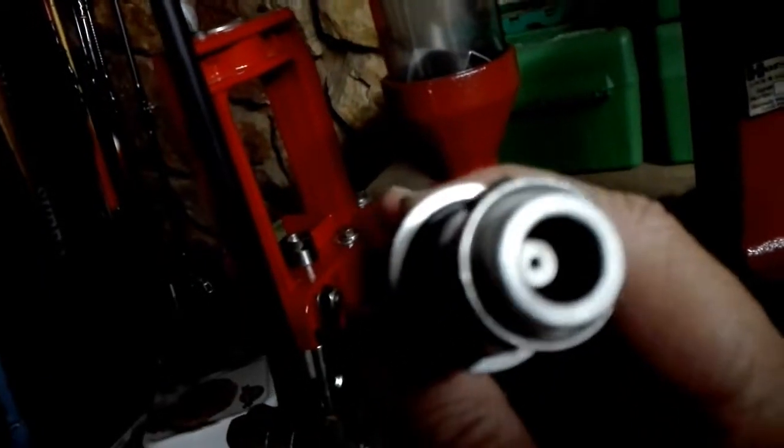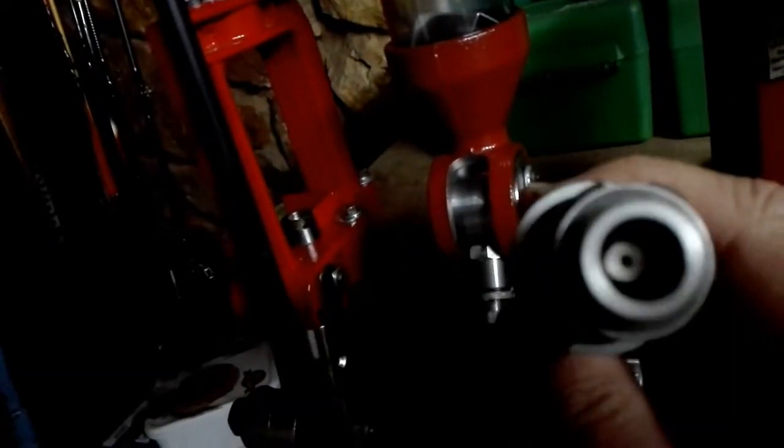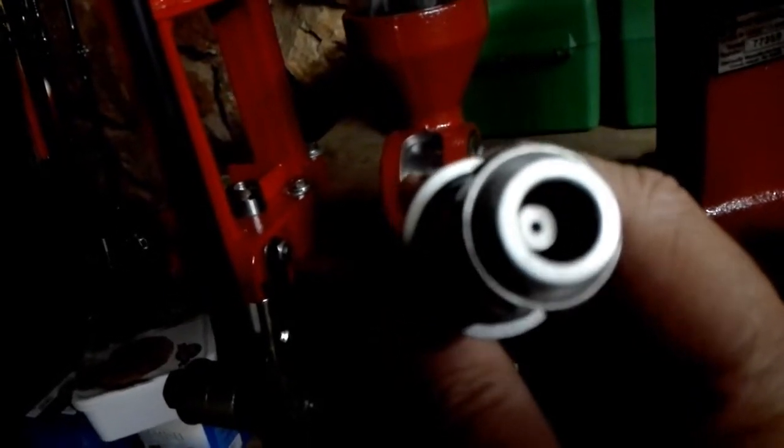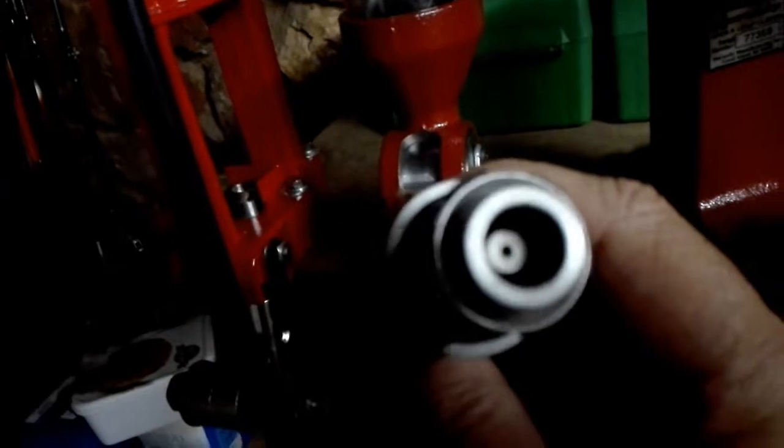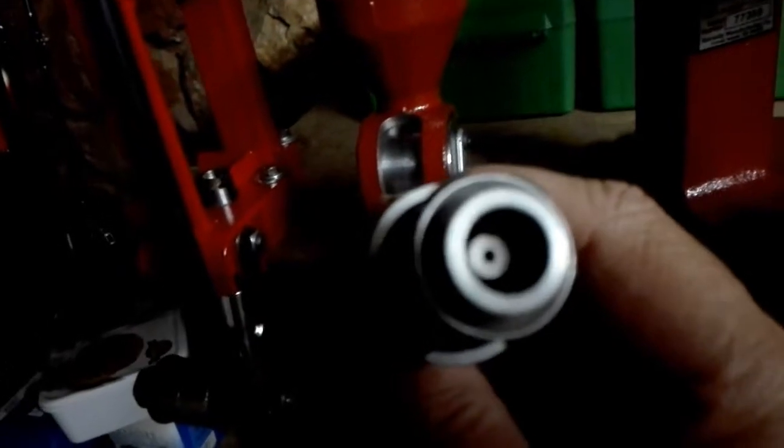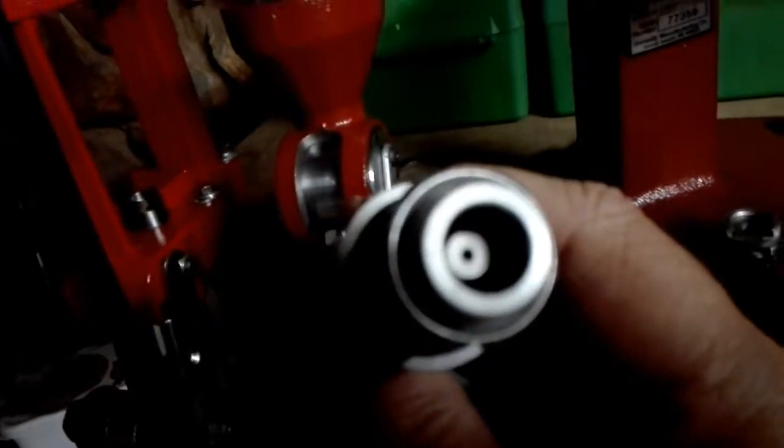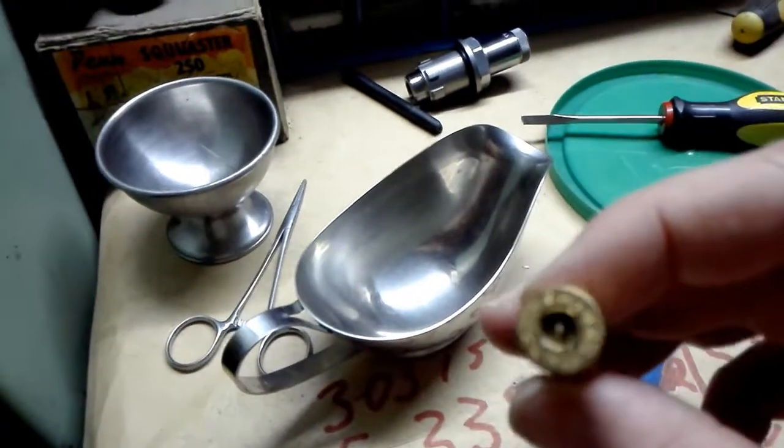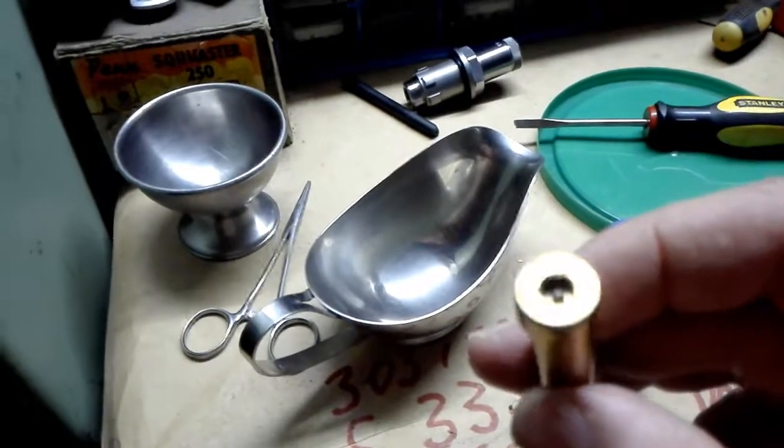In the resizing die, the decapping pin has been removed. With the Redding dies you can actually remove the decapping pin when you unscrew the parts and take it apart. You loosen the expander ball and you take out the decapping pin. You definitely have to remove your decapping pin because the decapping pin would go straight down into the middle of the case and it would get damaged and it would even damage your case.